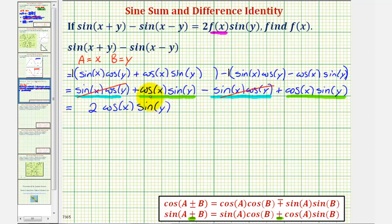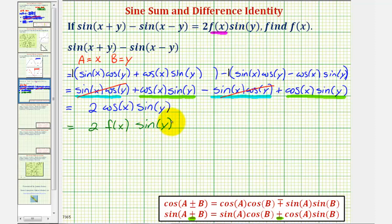So sine of the quantity x plus y minus sine of the quantity x minus y equals two times cosine x times sine y. Looking at the original problem, the left side was given as equal to two times f of x times sine y. So f of x equals cosine x.